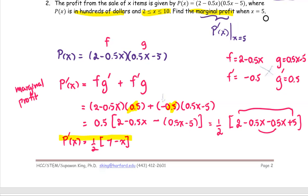Next, what we're going to do, we're going to find P prime at x equals 5, which the problem asks you to find.